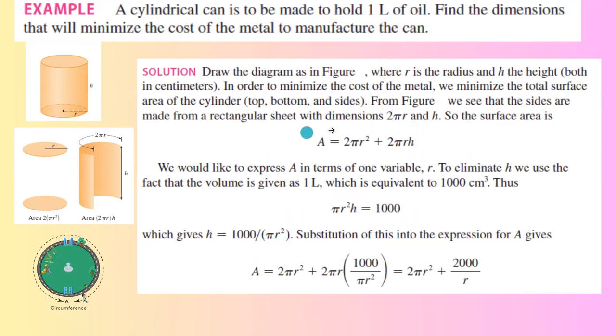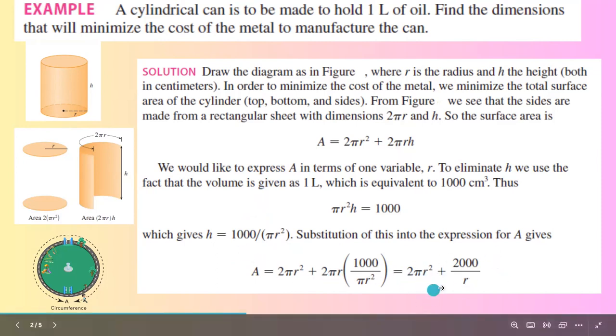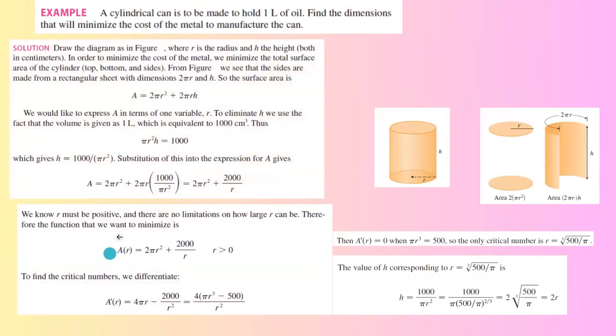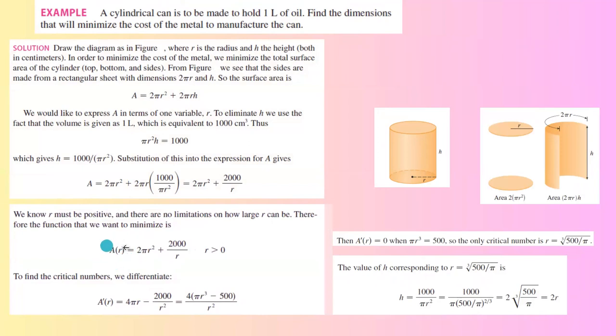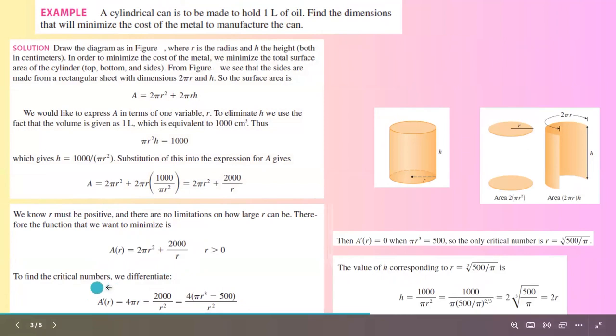Now substitute this into the surface area formula and simplify. So you get A = 2πr² + 2000/r. Why are we doing that? Because we want to take the derivative with respect to r. So since you have the function A in terms of r, 2πr² + 2000/r, we can take the derivative and find the critical value.